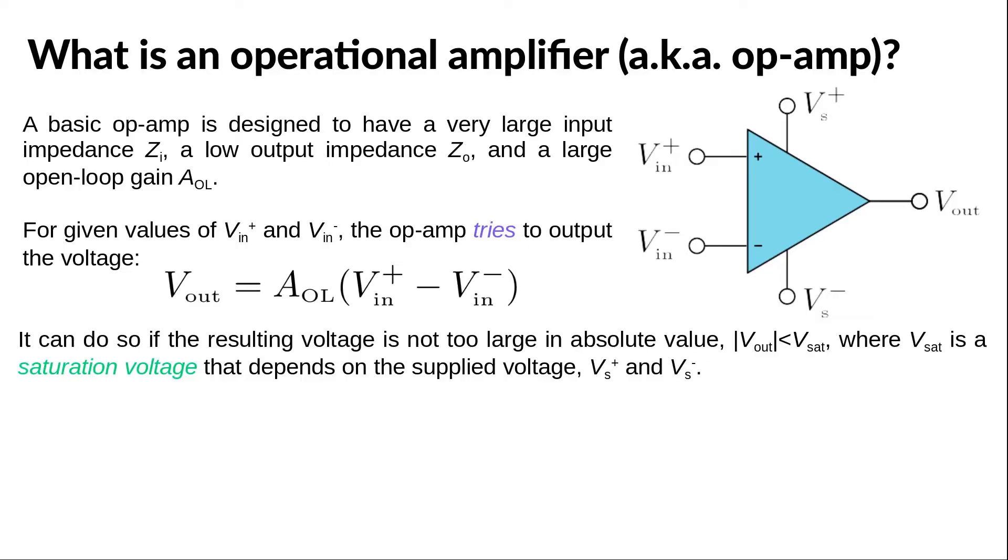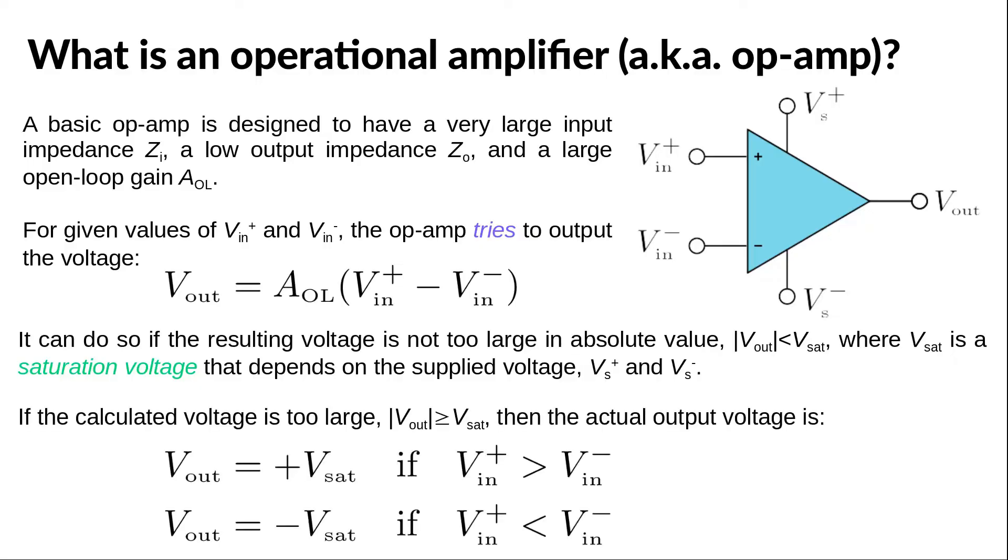For example, for an LM741 op-amp supplied with plus and minus 15 volts, the saturation voltage is 13.9 volts. If the voltage calculated with the above equation is too large, then the op-amp will simply output the saturation voltage.